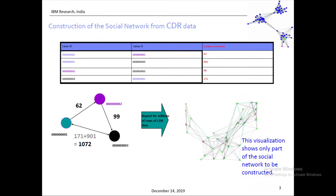I cannot really visualize this because I have millions of edges — it just looks like some mess. What we have to do is analyze this graph, look at certain parts of it, and see which parts give us insights that are of interest to us.